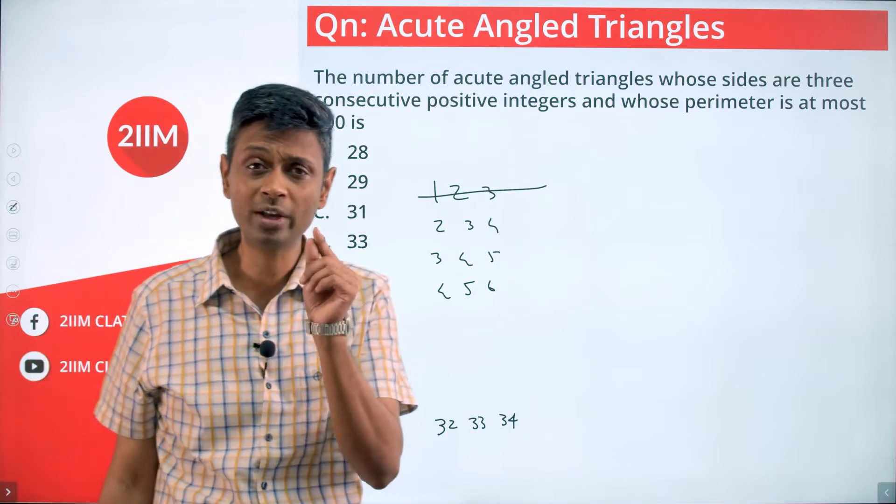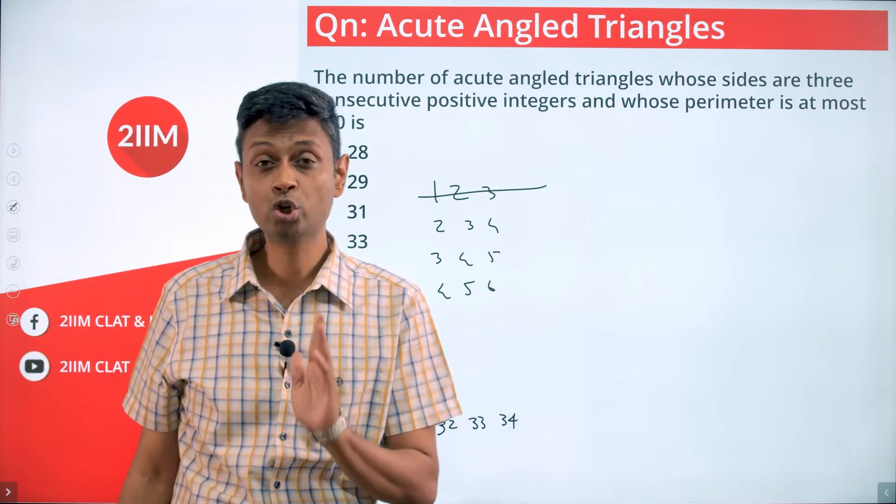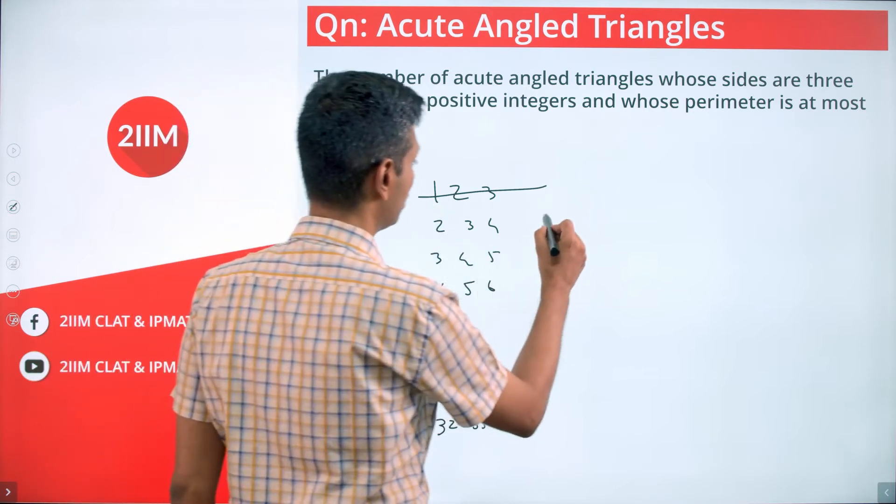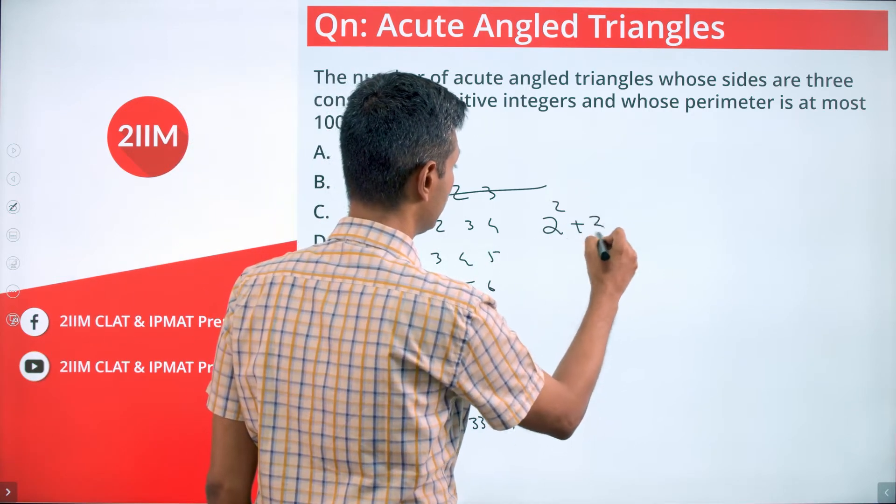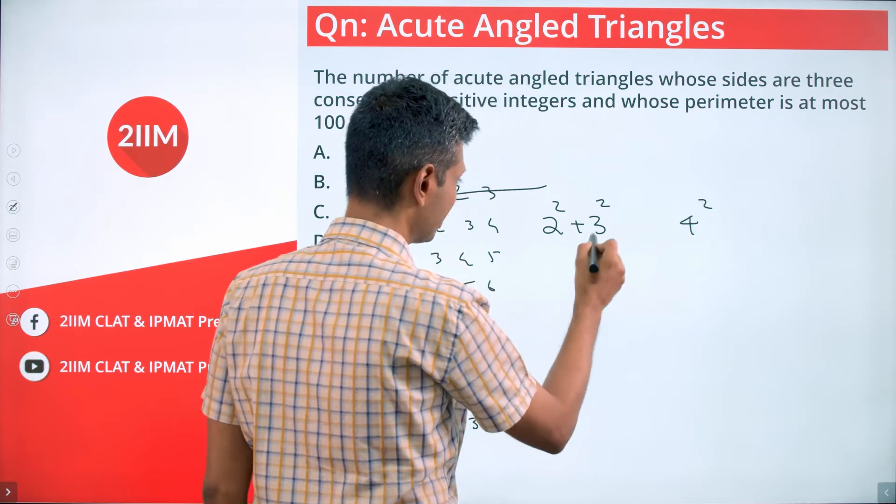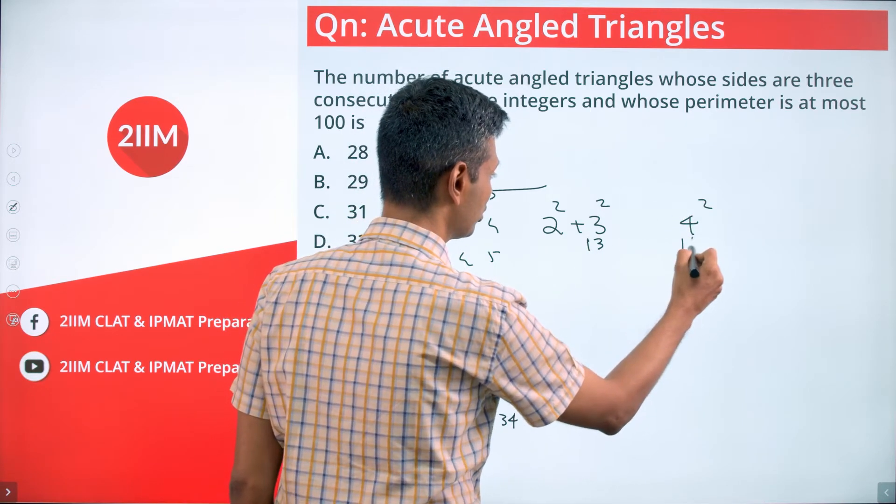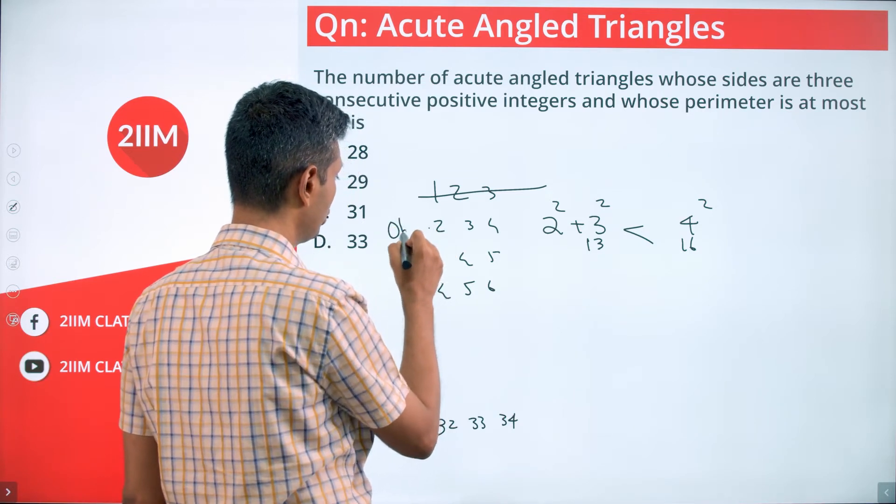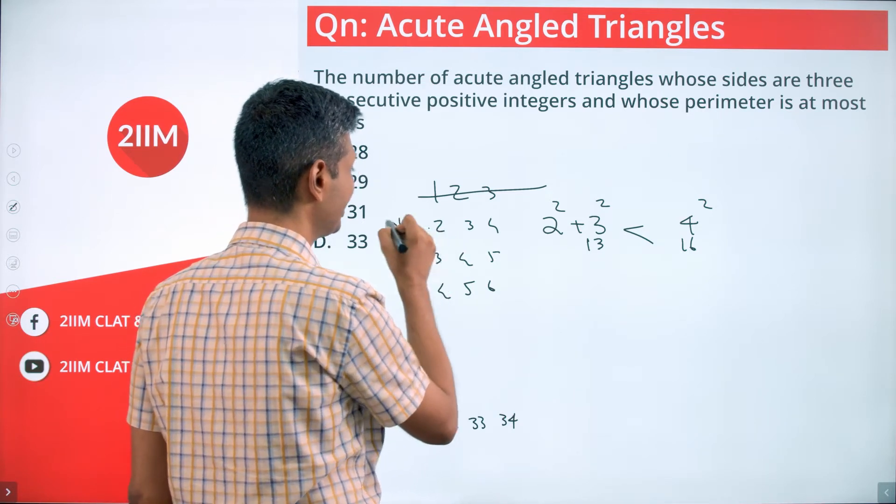So here we are comparing 2² + 3² with 4². 4 + 9 = 13 compared with 16. This is lesser. This triangle is obtuse angle. This won't get counted either.